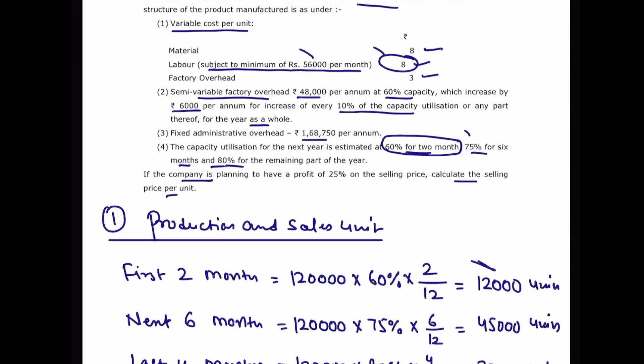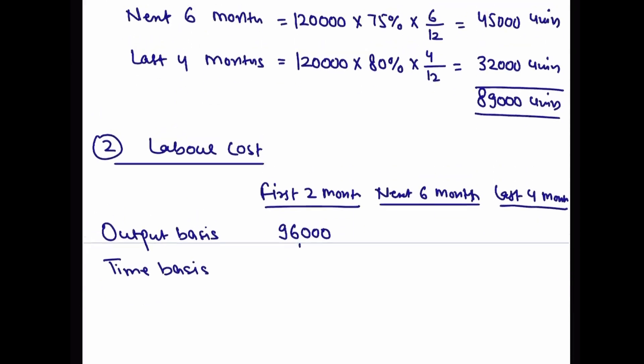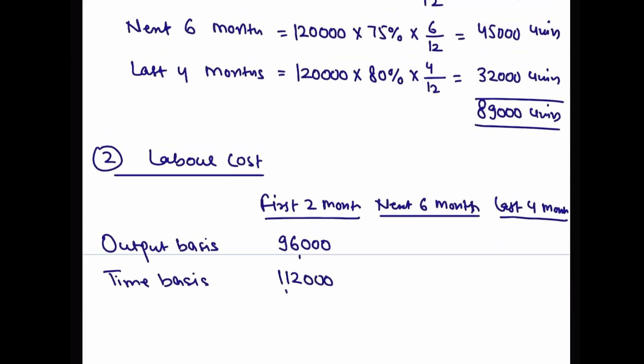Time basis: minimum 56,000 per month multiply by 2 months = 1,12,000. Output basis gives 96,000 and time basis gives 1,12,000. The minimum 56,000 per month condition means we take whichever is higher. Here 1,12,000 is higher, so wages for the first two months will be 1,12,000 rupees.